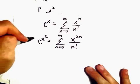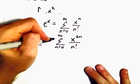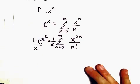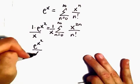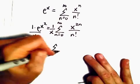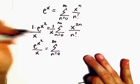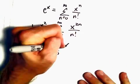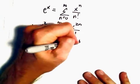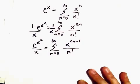If we multiply this by 1/x, we can multiply the right side by 1/x. So on the left side we'll have e^(x²)/x equals the series from n=0 to infinity. We've got like bases so we can subtract the exponents: x^(2n-1) over n factorial.